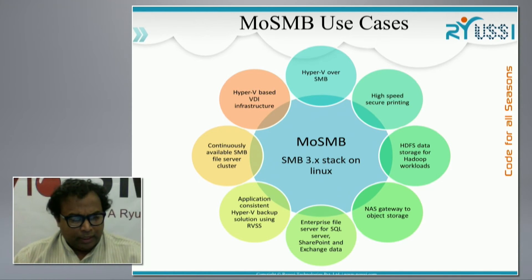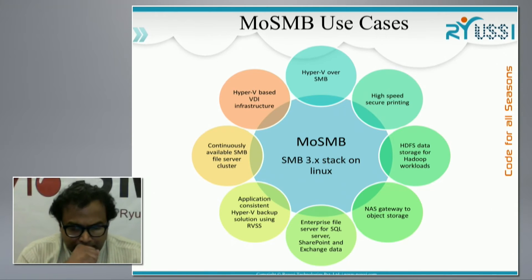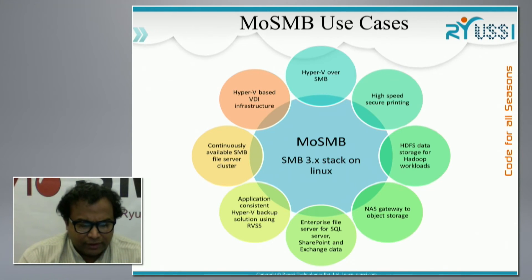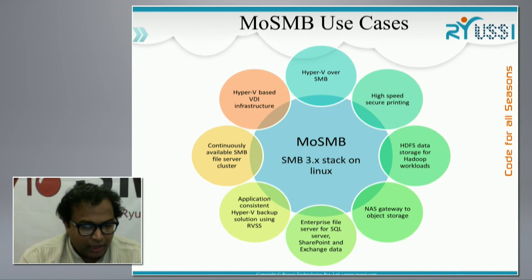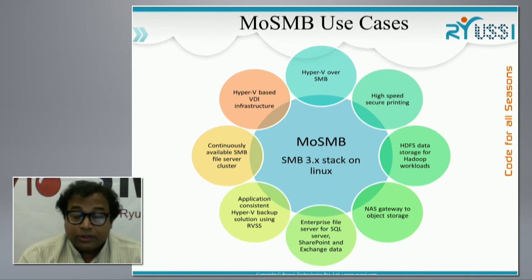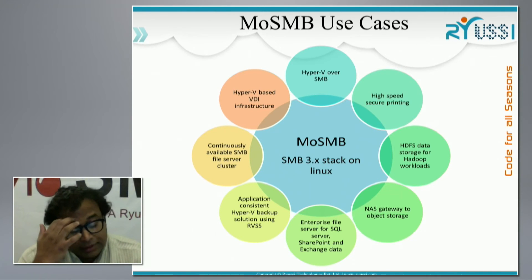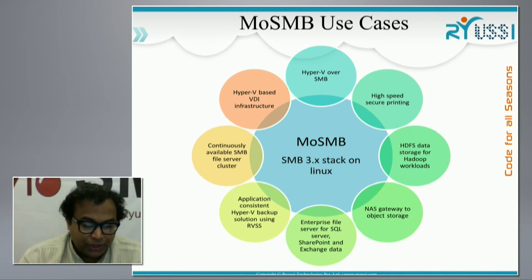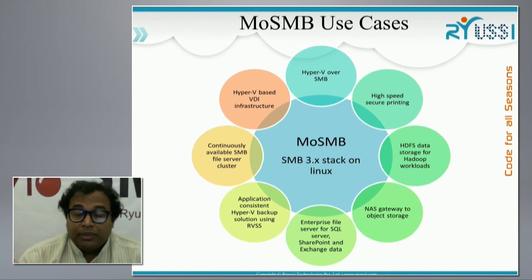The primary use case we began with was Hyper-V over SMB and VDI, as well as continuously available file servers and SQL Server. The deployments we are seeing are Hyper-V, continuously available SMB file clusters for large file operations like media editing, SQL Server, and SharePoint. An unusual use case we did not anticipate but which came out of the market was NAS gateway to high performance storage systems — Hadoop-like systems and high performance HPC file systems like Lustre.